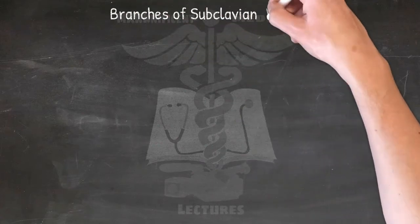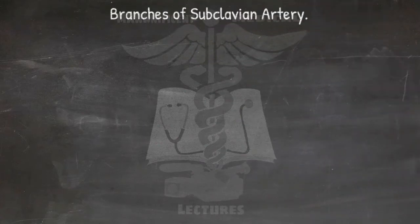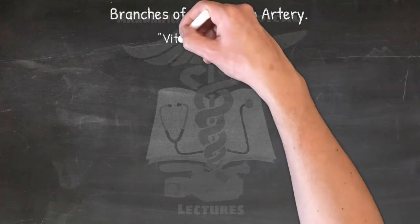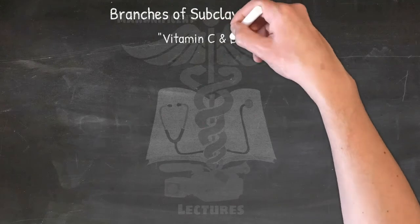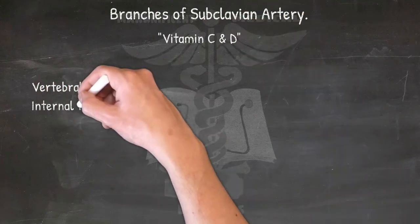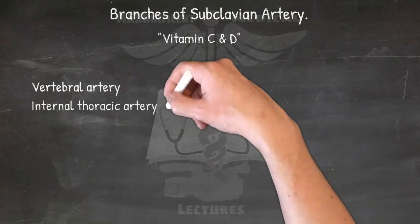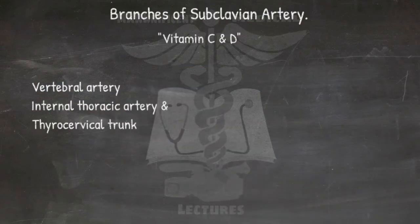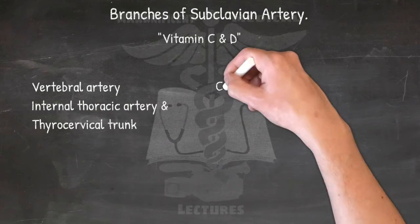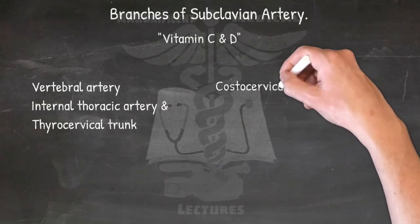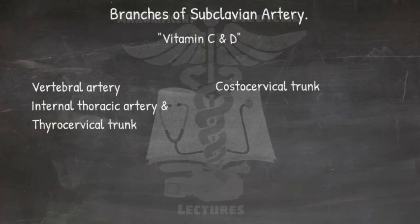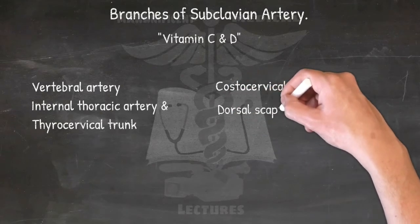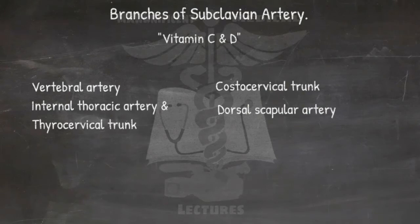For branches of the subclavian artery, use: 'Vitamins C and D.' The vertebral artery, internal thoracic artery, and thyrocervical trunk all arise from the first part of the subclavian artery. The costocervical trunk arises from the first part on the left and second part on the right. The dorsal scapular artery arises from the third part.